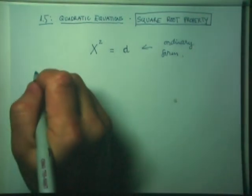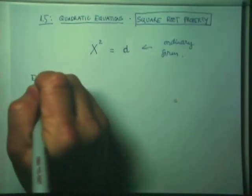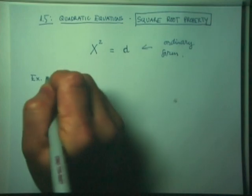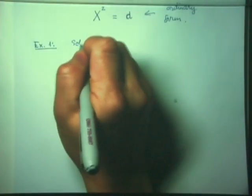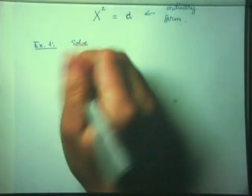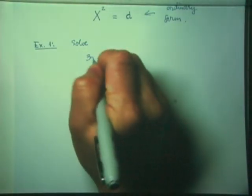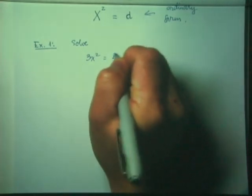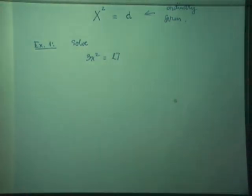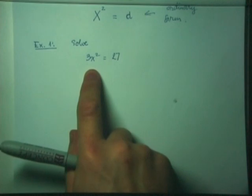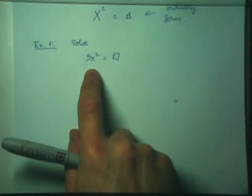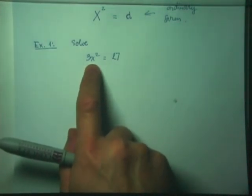Let's see how to do this with some more examples, besides those we did in class. In example number one, I would like to solve the equation 3X² equals 27. Looking at this equation, it's not quite in ordinary form yet.